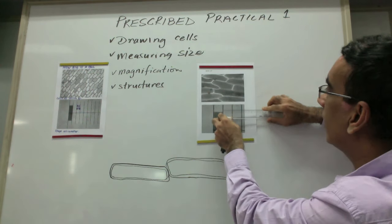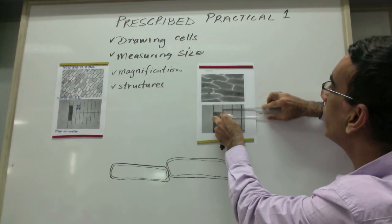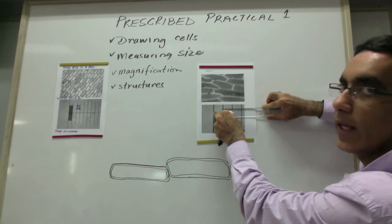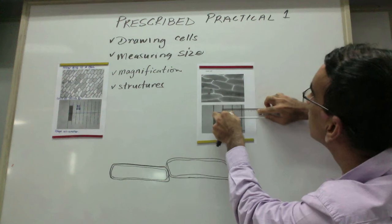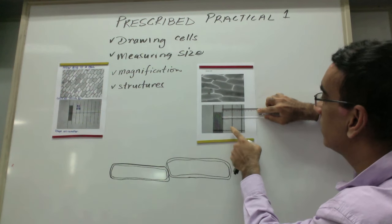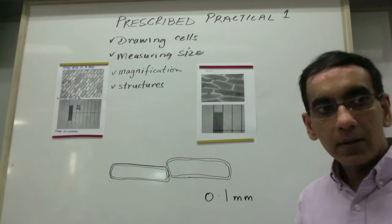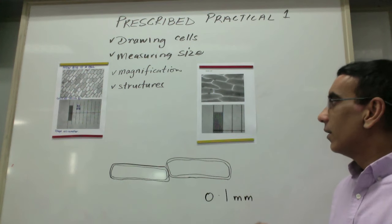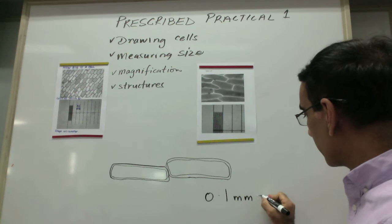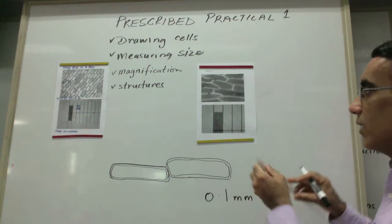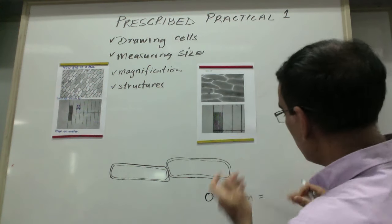I want you to take your ruler now and actually measure on the picture how much that 0.1 of a millimeter is from this point to this point. You're saying that 0.1 of a millimeter is equivalent to an actual distance of 33 millimeters.